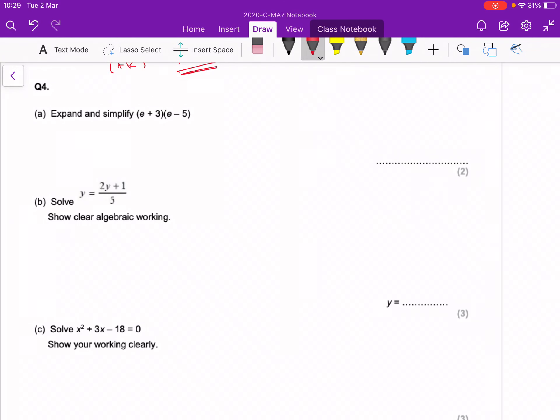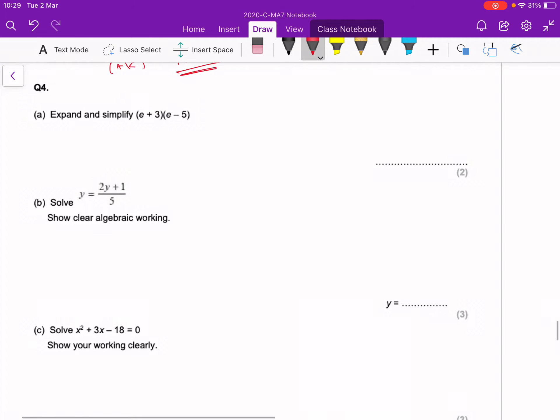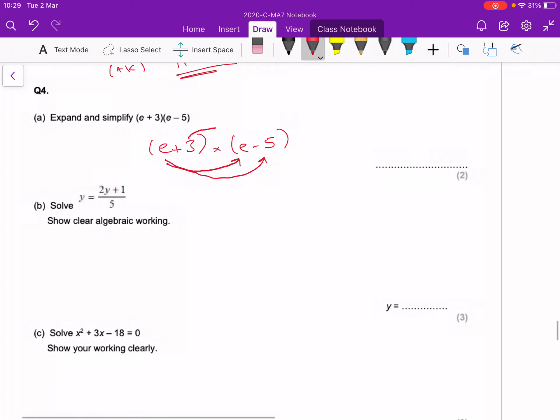Question number four is algebra questions. We've got a double bracket here with a multiply sign in between the two double brackets, so it's (e + 3) times (e - 5). Everything in the left hand bracket needs to multiply everything in the right hand bracket. So there's two little multiplies to do there, and this three also needs to do the same—we need to multiply that one and that one.